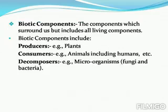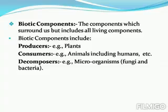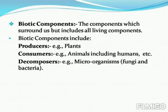Now, biotic components. These are the components which surround us but include all living components. Biotic components include producers, which produce or make their own food — for example, plants. Second, consumers, which depend on producers for food — for example, animals including humans. Decomposers break down chemicals from producers and consumers, usually dead organisms, into simpler forms which can be reused — for example, microorganisms, fungi, and bacteria.